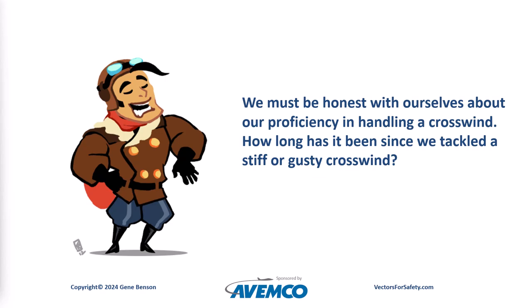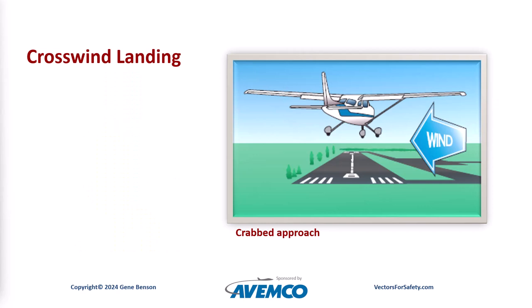We must be honest with ourselves about our proficiency in handling a crosswind. How long has it been since we tackled a stiff or gusty crosswind? Let's look at the mechanics of a crosswind landing. The runway centerline can be tracked by establishing a wind correction or crab angle — this is exactly what we do on a cross-country flight to maintain a desired ground track. Some pilots advocate maintaining the crab until just before touchdown and then kicking it out. The problem is that timing must be precise and if conditions are at all gusty, some luck is also required. If we contact the runway in a crab angle, we can put significant side load on the landing gear.